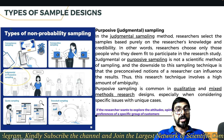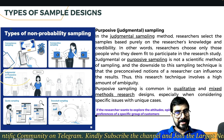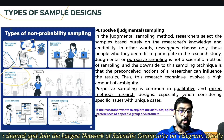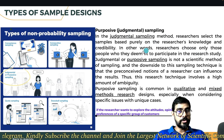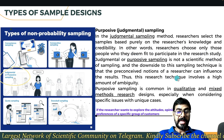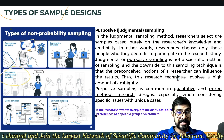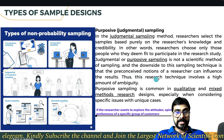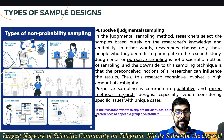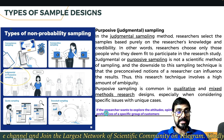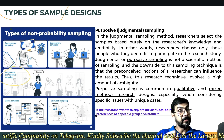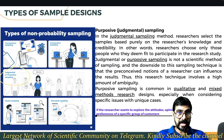Purposive sampling, also called judgmental sampling — the researcher selects samples based purely on their own knowledge or credibility. The researcher knows which type of people to select and chooses only those deemed fit to participate. It involves a high amount of ambiguity and is common in qualitative and mixed methods research. The researcher wants to explore attitudes, opinions, and preferences of a specific group of customers or patients — that specific selection is called purposive sampling.